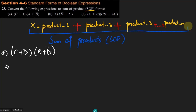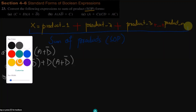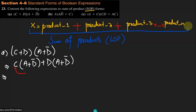To convert it, we can distribute: c multiplied by (a + d prime), and d multiplied by (a + d prime). Expanding this gives us c·a plus c·d prime, and similarly d·a plus d·d prime.